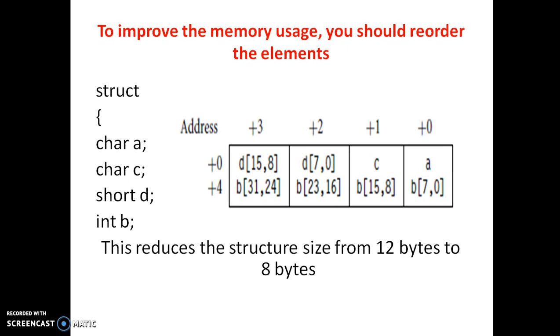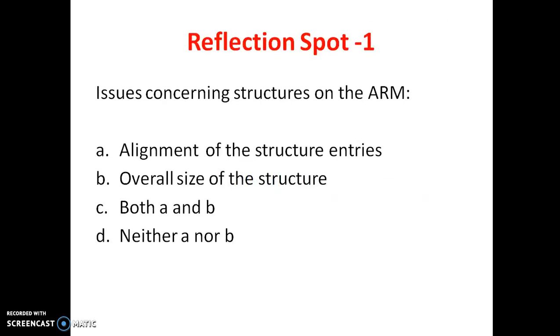Now here we are reordering into 8-bit size first, 16-bit size second, and then 32-bit size third. So if we reorder in this way, we can reduce the structure size from 12 bytes into 8 bytes of information.